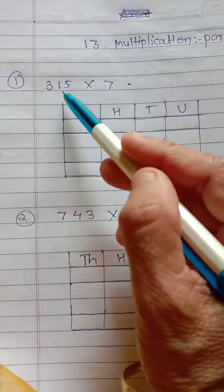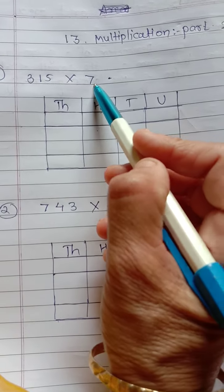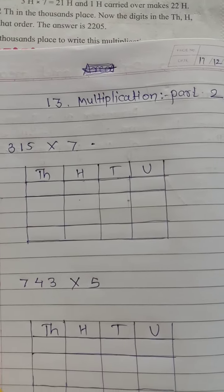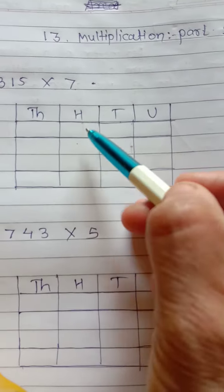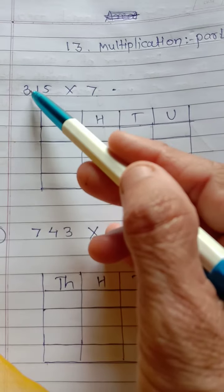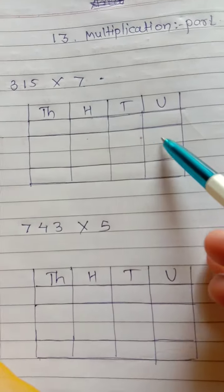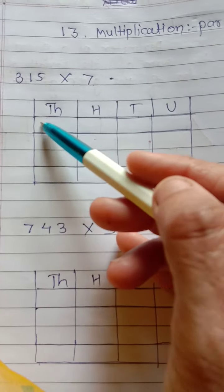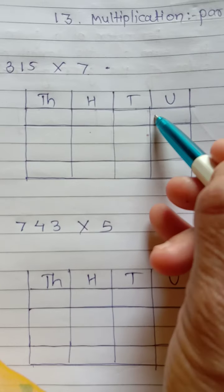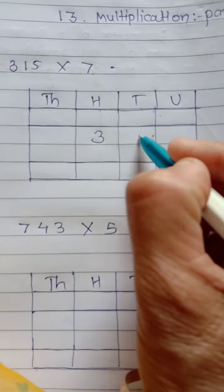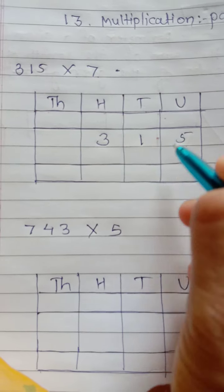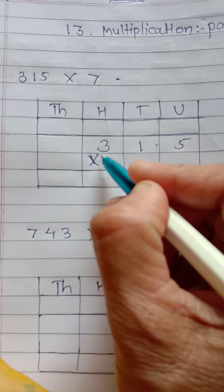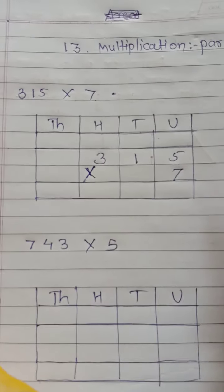First sum is 315 multiply 7. Solve this sum using this different method. Look here. First, you write down, draw the columns like this. There are three digit numbers. You must make four columns. You need tens, hundreds and thousands. Then, do one line here and write down the sum. Sum is 315 multiply by 7.